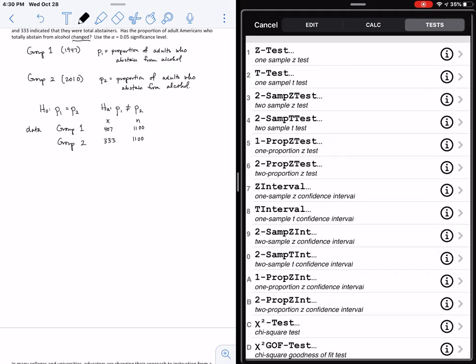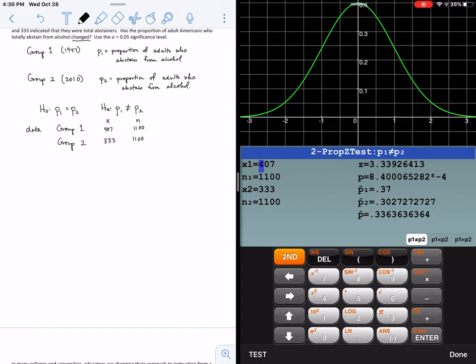So number six, two proportion Z test. And this is now where we have to enter our information. So X1 is 407, which you have already entered, and out of 1,100. X2 was 333, and it also had 1,100. And our alternative is a not equals, which is already selected.